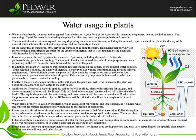In summary, water is used by plants for a variety of purposes, including the uptake of minerals, photosynthesis, growth, and cooling. The amount of water used for each of these purposes can vary depending on the environmental conditions and the needs of the plant.